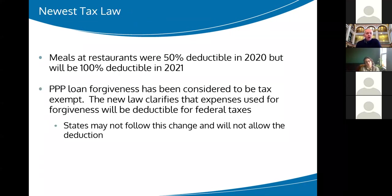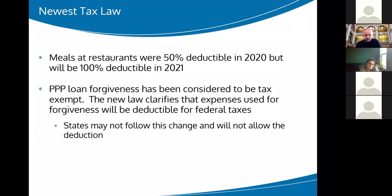Now we'll talk about some new tax law. Last year I talked about the new tax law with qualified business income, which we'll touch on briefly. The newest law was passed about a month ago. There's also what's called the three-martini lunch tax break, where restaurant meals will be 100% deductible in 2021. So there's a little incentive for you to go spend money at a restaurant and have your co-op pay for it.